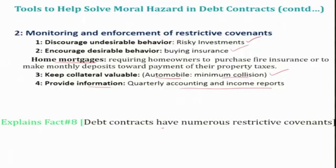Even beyond covenants, lenders control moral hazard by disbursing loan installments step by step. For example, if you take a housing loan for 10 lakhs, you will not receive the entire amount at once. Each installment is released as agreed activities in the construction of the home are completed. This ensures that the borrowed funds are used mainly for the intended purpose, which also explains why debt contracts have numerous restrictive covenants.